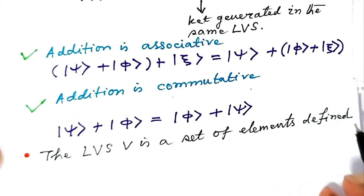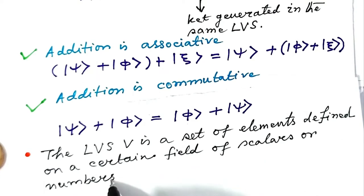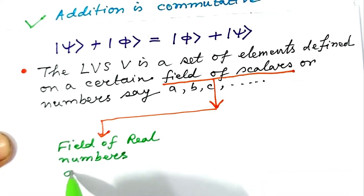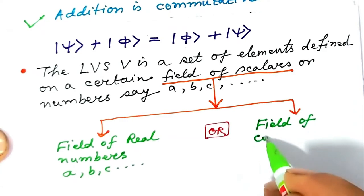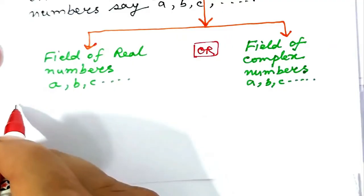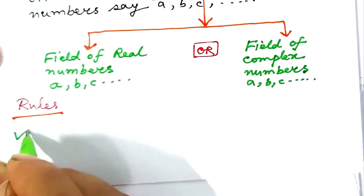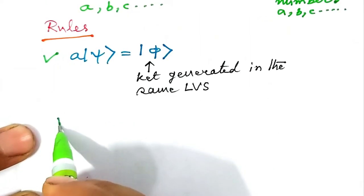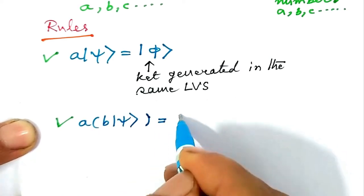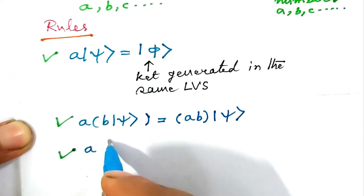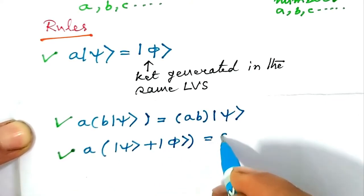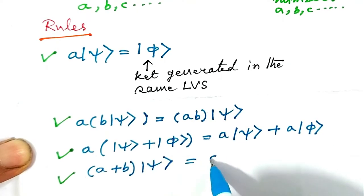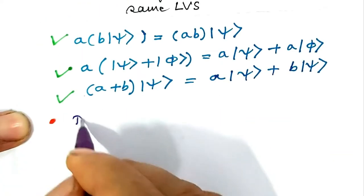The linear vector space is defined on a certain field of scalars — say a, b, c. The field of scalars can be real numbers or complex numbers. Scalar multiplication: a times ket-psi gives ket-phi, a ket generated in the same linear vector space. Also, a times (b ket-psi) equals ab ket-psi. And a times (ket-psi plus ket-phi) equals a ket-psi plus a ket-phi.